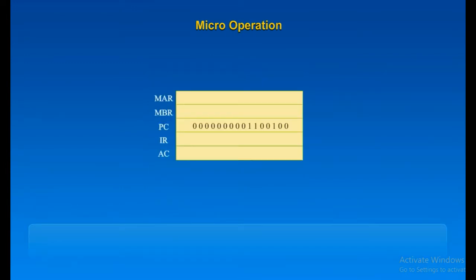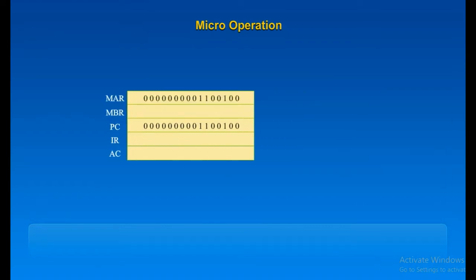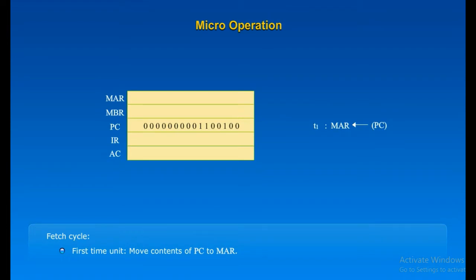Let us see what micro-operations are involved in the instruction cycle. Assume an instruction resides at a 16-bit address: binary 0000000000011000, whose hex equivalent is 0064. This address resides in the PC. This address is moved into MAR, which points to a location in memory. The memory word at that address is then transferred into MBR. This is an instruction, which is then moved into IR. The fetch phase is done.